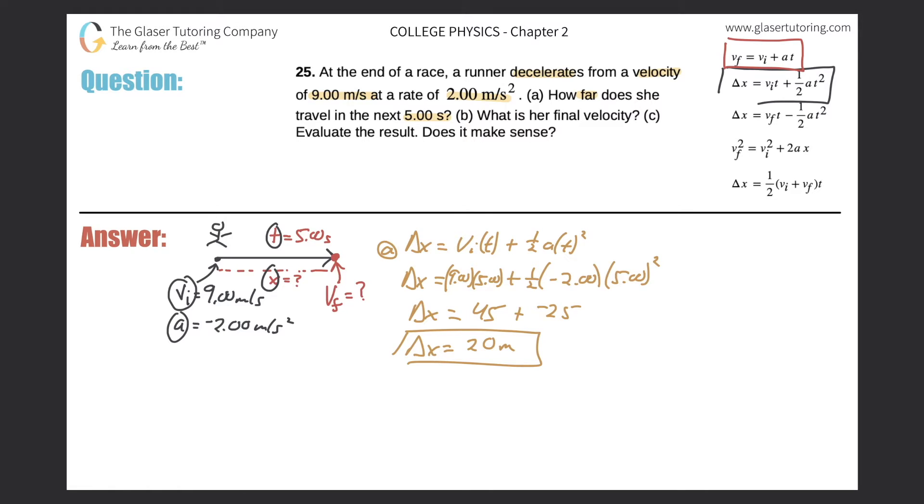The reason why I'm going to choose that one is because, well, let me just rewrite it down here on the bottom left, and then I'll tell you the reasoning. Initial velocity plus acceleration times time. The reason why I'm going to choose this is because the velocity, the initial velocity was given, the acceleration was given, and the time was given.